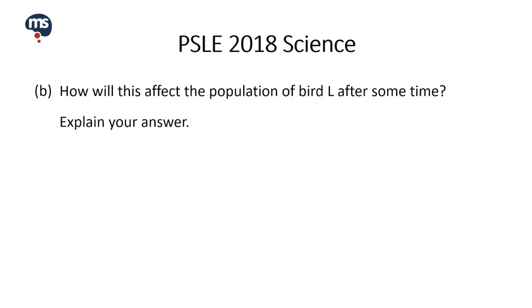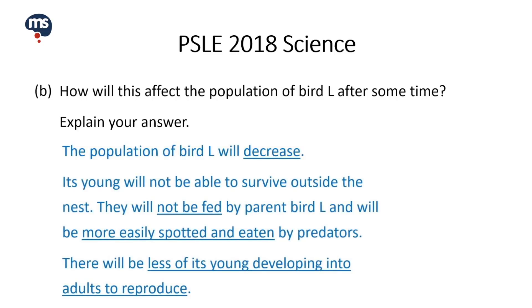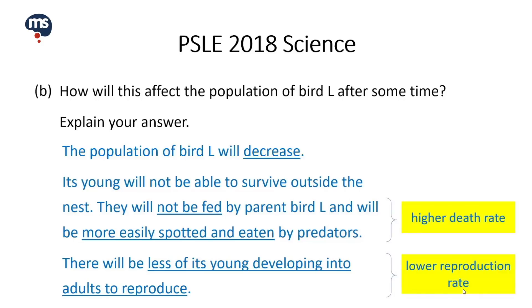Let us now take a look at the answer. The population of bird L will decrease. Its young will not be able to survive outside the nest — they will not be fed by parent bird L and will be more easily spotted and eaten by predators. There will be fewer of its young developing into adults to reproduce. Since the death rate is higher and the reproduction rate is lower, the population of bird L will decrease.